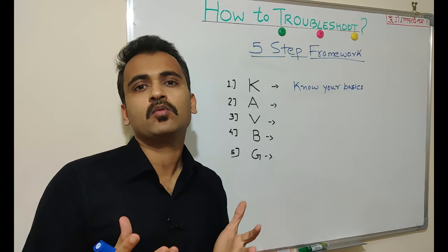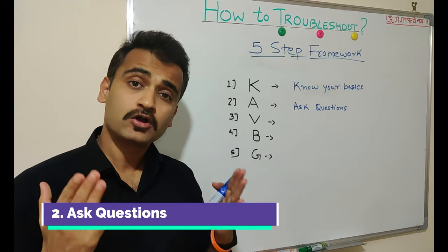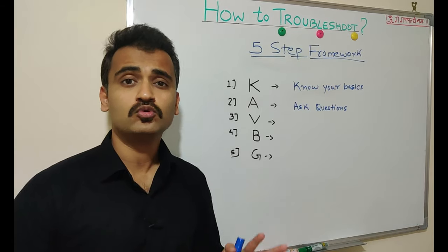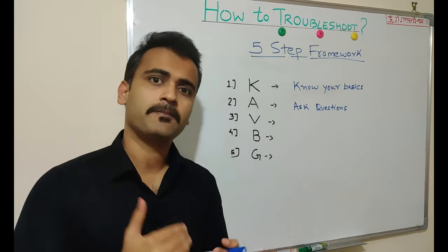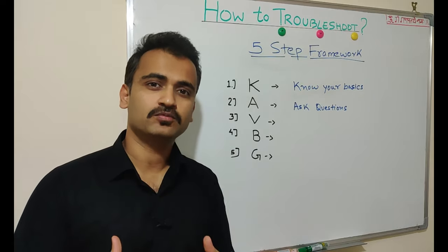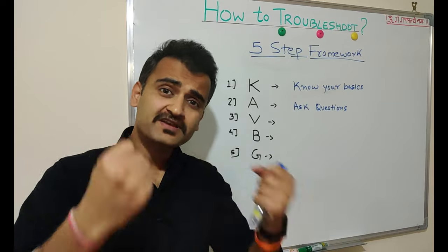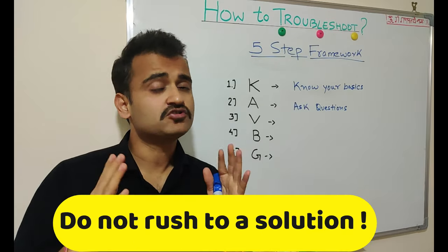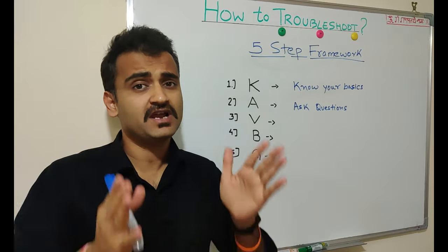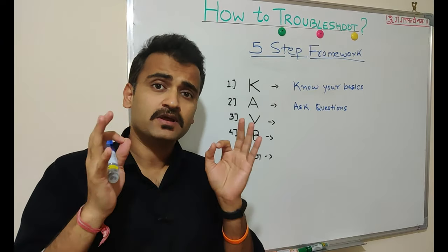The second point is: ask questions. This is by far the most underrated thing we do when we get a problem to fix. We do not ask enough questions to establish the exact issue; instead we go and start trying to fix it abruptly, which is not the right way. You should ask all the right questions to make sure you are exactly understanding the business user's issue or any customer's pain point.